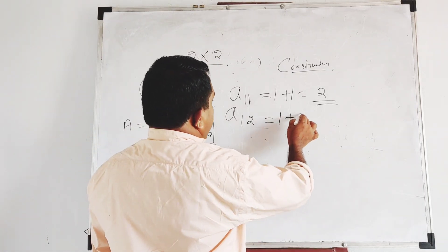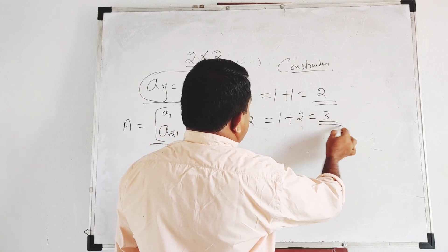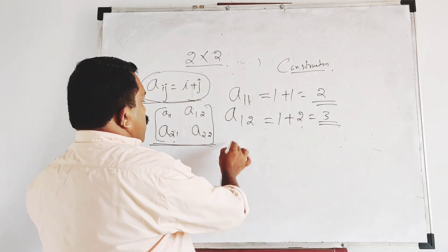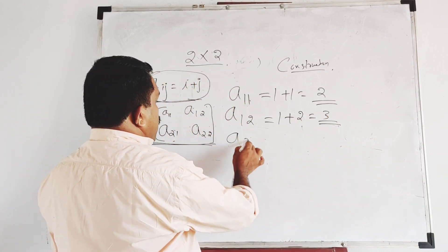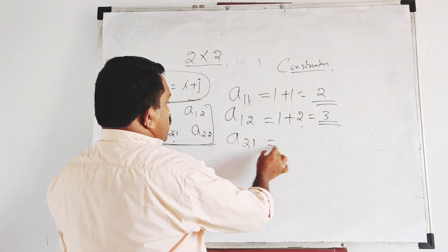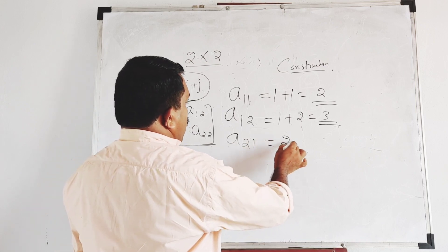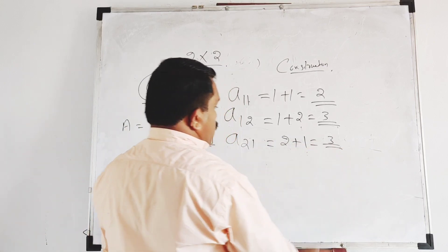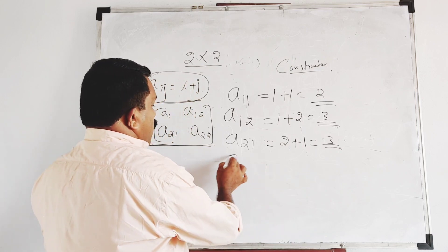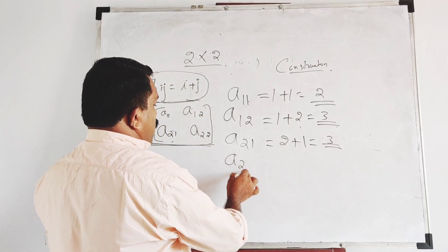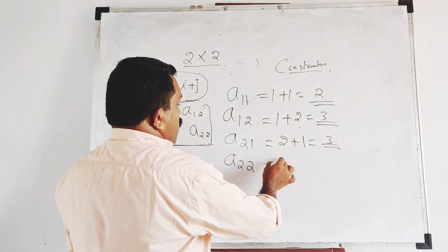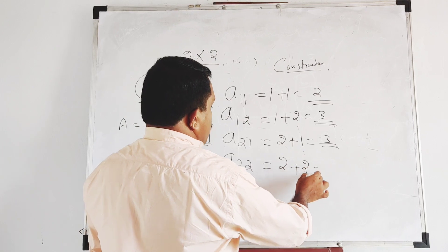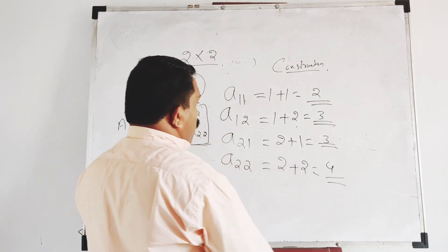1 plus 2, that is equal to 3 — second element. A(2,1): 2 plus 1 is equal to 3 — second element. Last element A(2,2): that is equal to 2 plus 2, equal to 4.